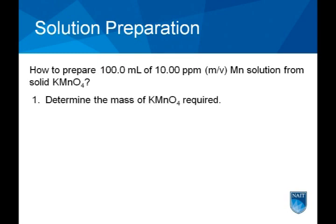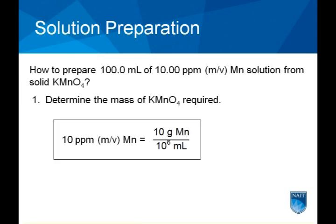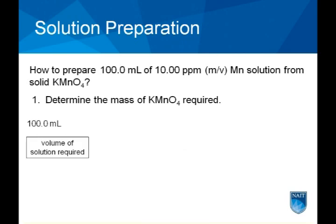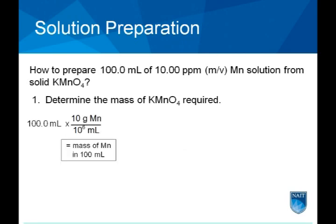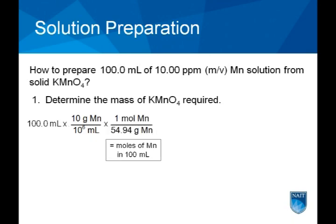To determine the mass of potassium permanganate required in solution, it is necessary to convert parts per million of manganese into equivalent units of mass and volume. The factor unit method is then used to calculate the mass of potassium permanganate required for preparing 100 milliliters of solution.